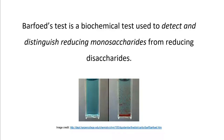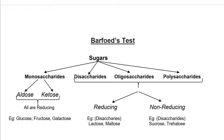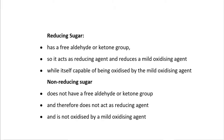Before we delve into the main subject of this video, here's a quick recap on sugar classification and the difference between reducing and non-reducing sugars. Sugars, also known as carbohydrates, are classified into four major categories. Monosaccharides are the simplest carbohydrates and are the building blocks for the other three types of sugars. Monosaccharides can be aldoses or ketoses. An aldose is a monosaccharide with a free aldehyde group at one of the terminal carbons, while a ketose is a monosaccharide with a free ketone group per sugar molecule.